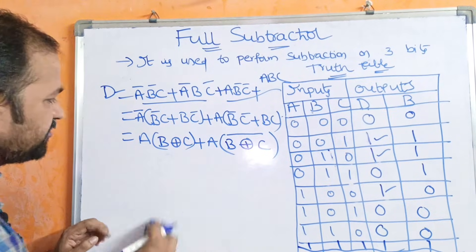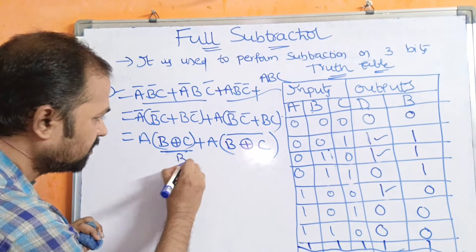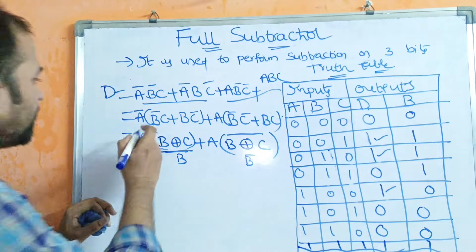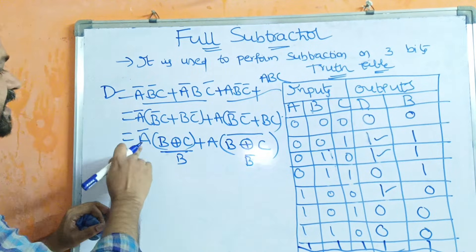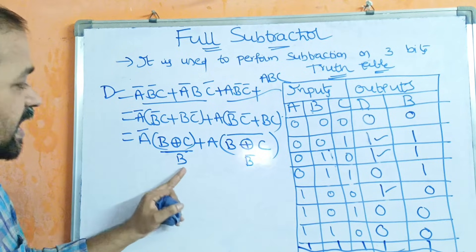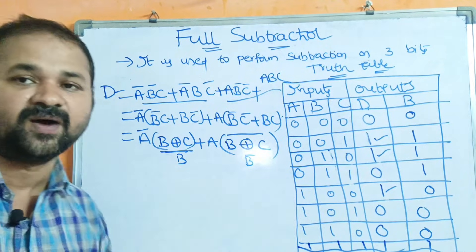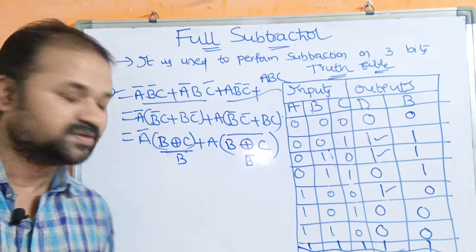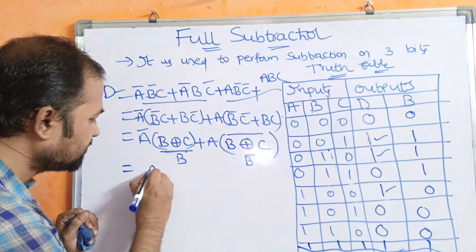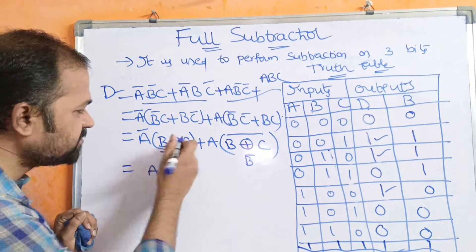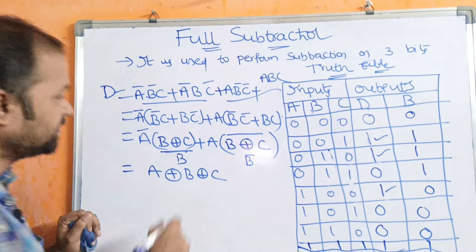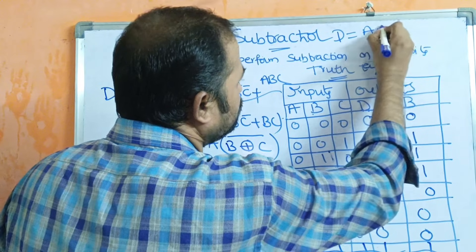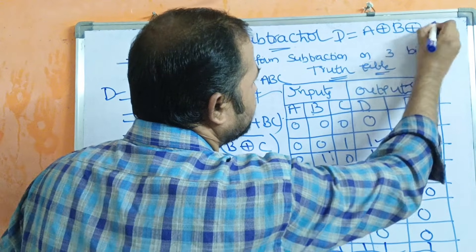If we observe here, letting this term be represented as the complement form, A-bar is the term. So this is in the form of A-bar·B + A·B-bar, which is nothing but the exclusive-OR formula. Therefore A XOR (B XOR C). So the difference formula is A XOR B XOR C.